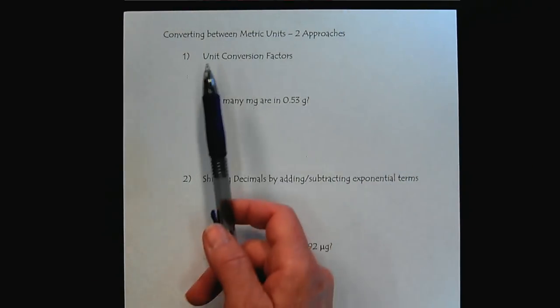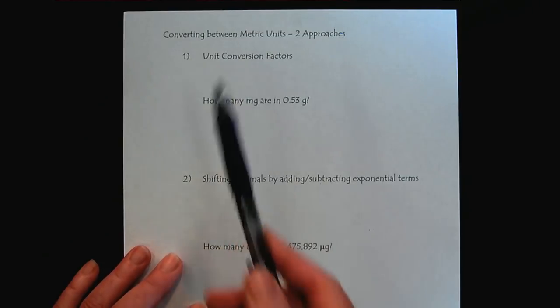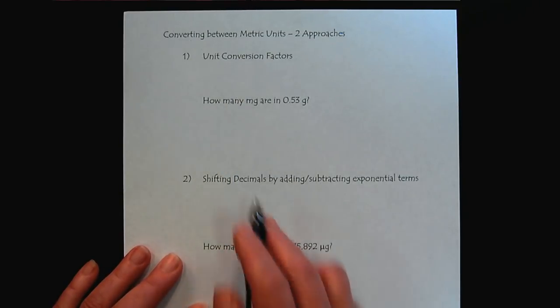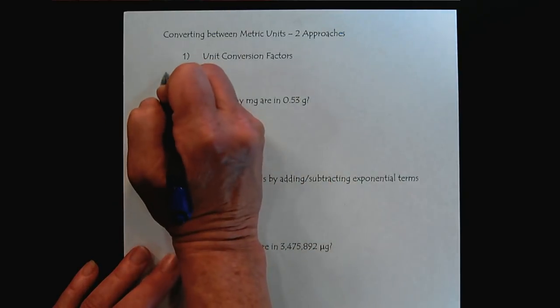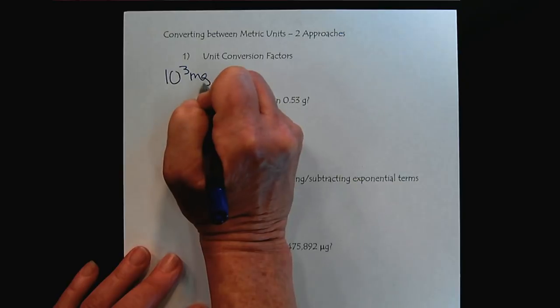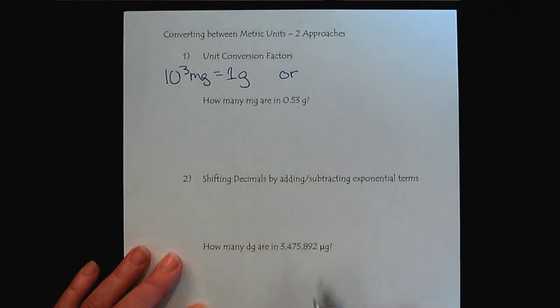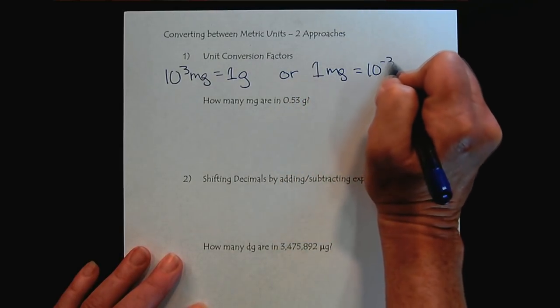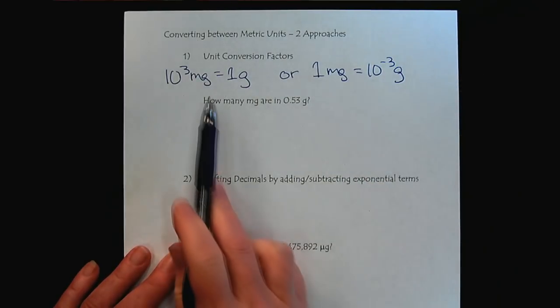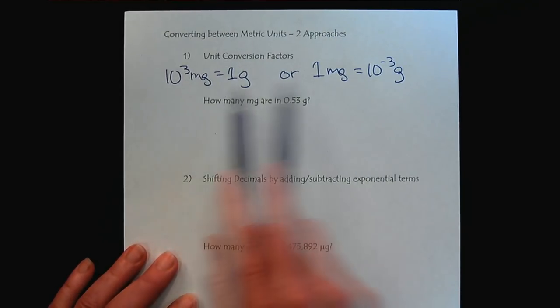The first way is the way commonly used by chemists where we would use conversion factors. For example, if we wanted to convert between milligrams and grams, we can use the metric conversion that there are a thousand milligrams equals one gram, or we could say that one milligram is ten to the minus three grams. So whichever way you're comfortable defining the relationship between metric units, use whichever term you feel is the best.